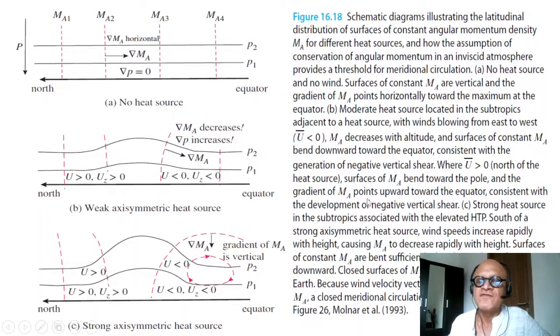The gradient of Ma points upward north of the heat source. Sources of Ma bend toward the pole and the gradient of Ma points upward toward the equator, consistent with the development of negative vertical shear.